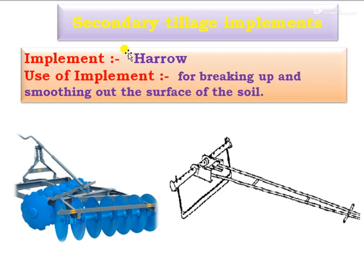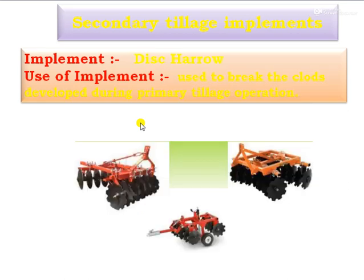Next are the secondary tillage implements. The first one is the harrow. Harrow is useful for breaking up and smoothing the surface of the soil, as well as removal of stubbles or weeds, making furrows, and also for covering of the seed.